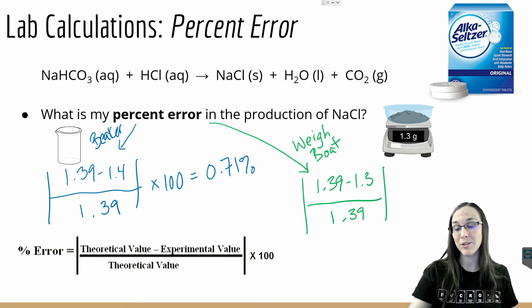Or if I do the percent error calculation with my weigh boat value of 1.39 minus 1.3 from the lab divided by 1.39, again that's the theoretical, absolute value thereof, times 100, would give me 6.92 percent error.